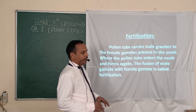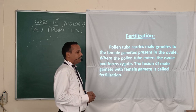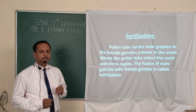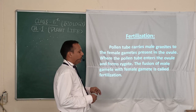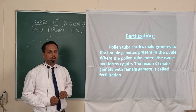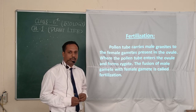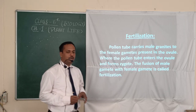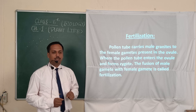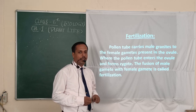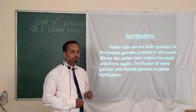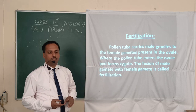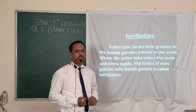When the pollen grains reach the stigma, they are transferred to the ovary by the pollen tube, where they fuse with the ovules. So pollen grains are the male gametes and ovules are the female gametes. The male gametes are transferred to the female gametes by the pollen tube. Fertilization is the process where male gametes and female gametes fuse with each other.